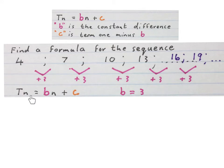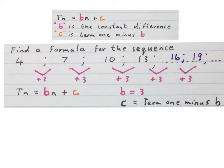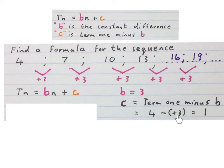I'll write down the formula Tn = bn + c, and I already know that b is 3 and c is term 1 minus b, and that is 4 minus plus 3, which is 1. So the formula for this sequence is Tn = 3n + 1.